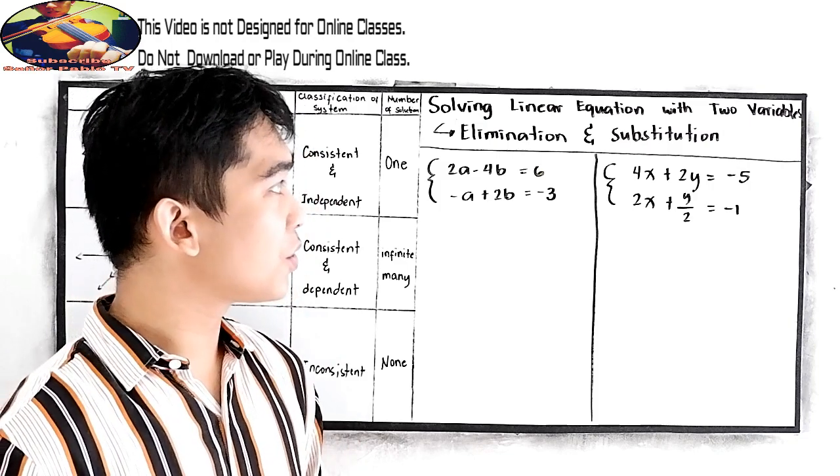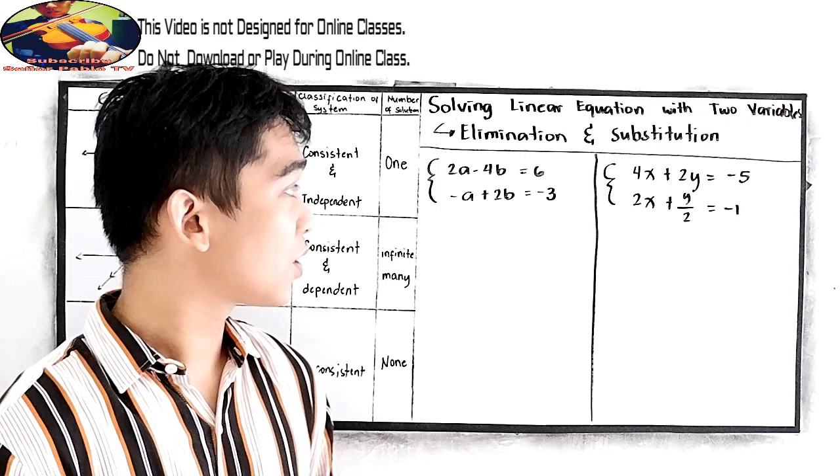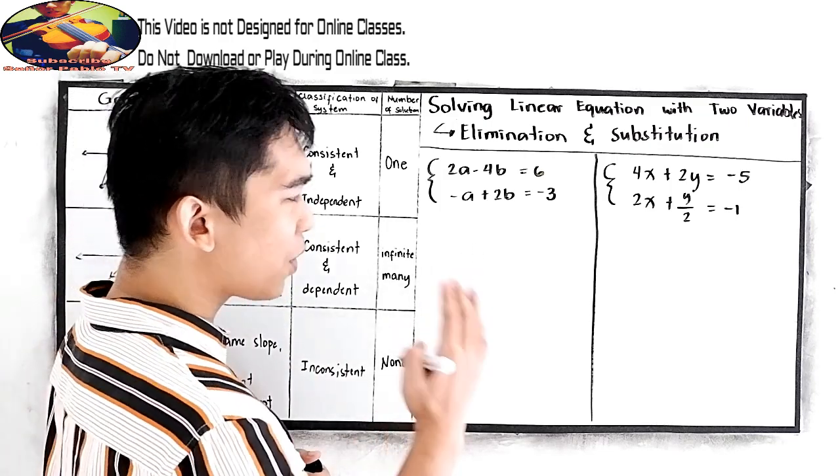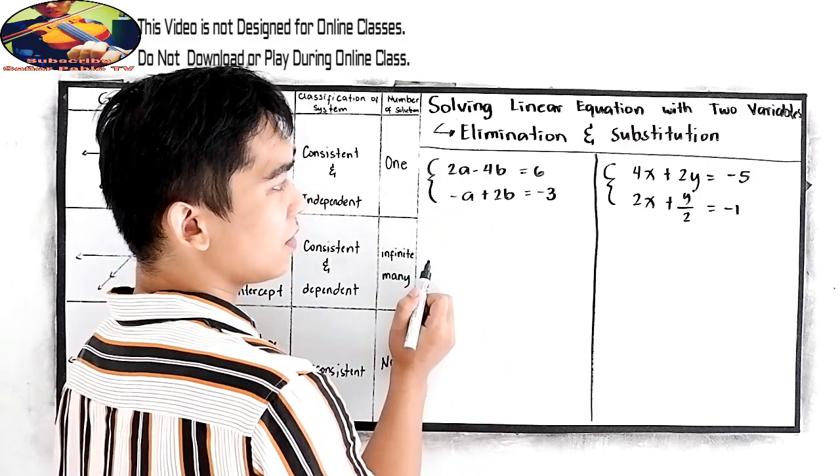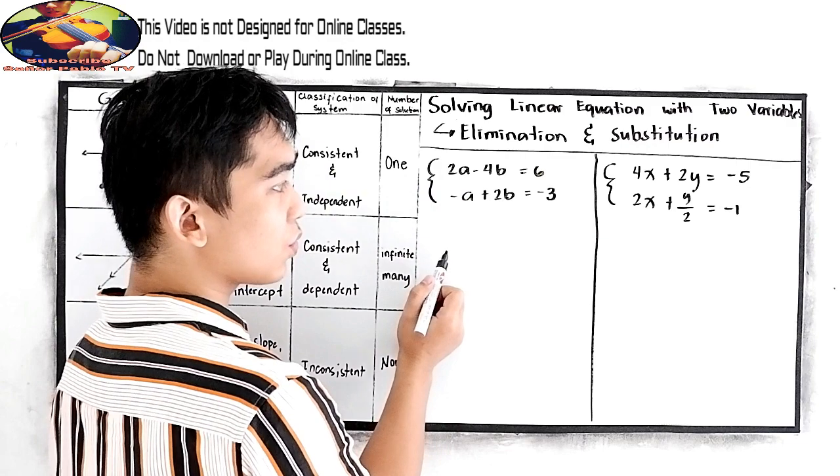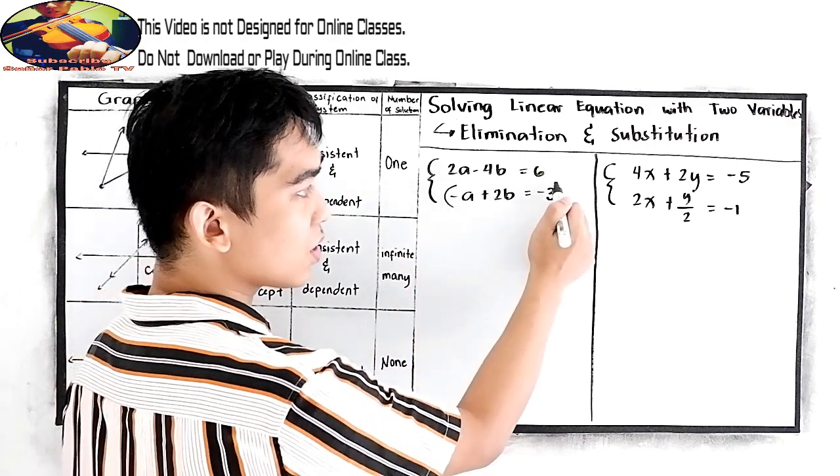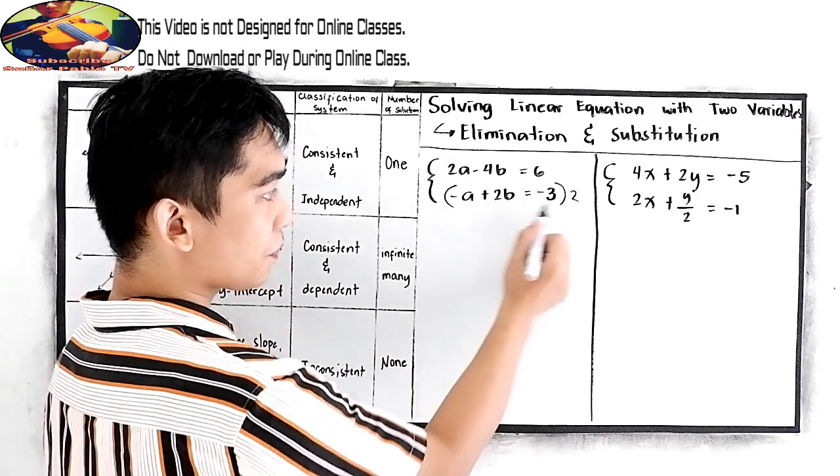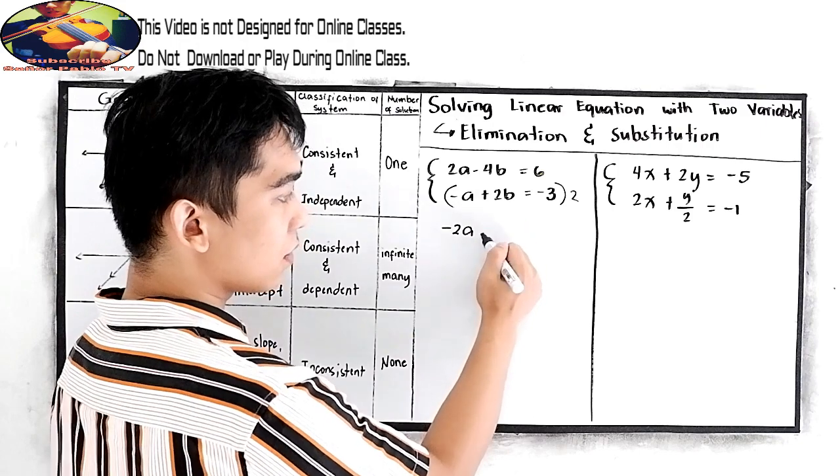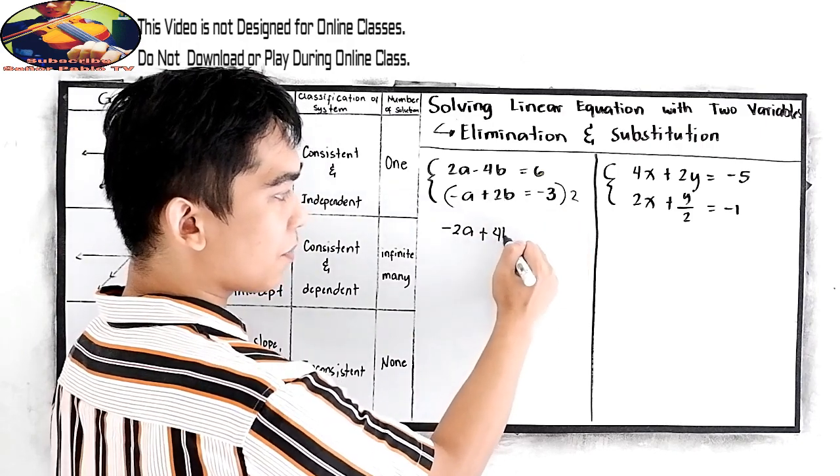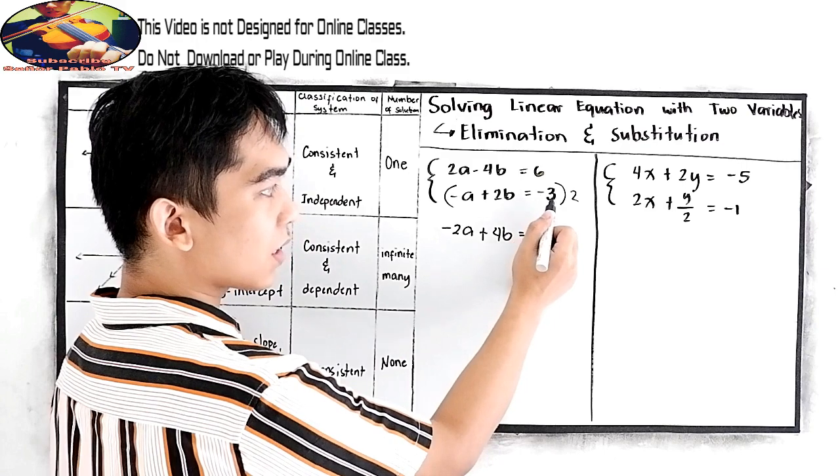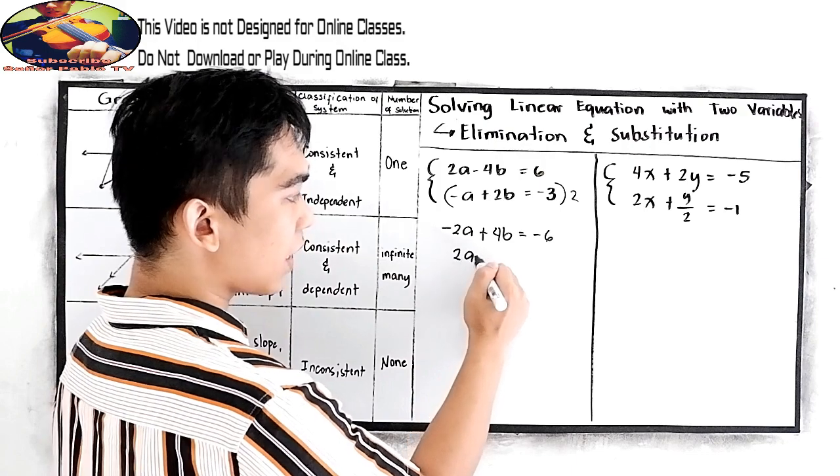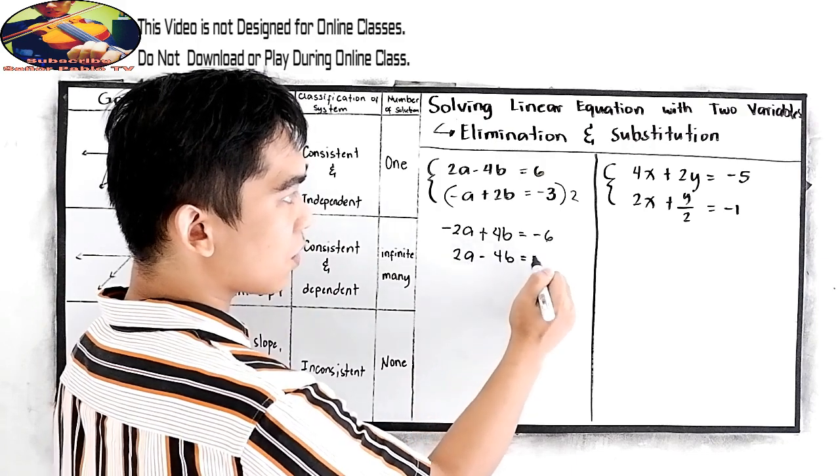So we're going to use the elimination method, the easiest way to solve this. So our goal is the coefficient for a in both equation 1 and equation 2 must be the same. So all I need to do is to multiply 2 in our equation 2. So that will become negative 2a plus 2 times 2b, 4b is equal to negative 3 times 2, negative 6. And just copy the equation 1, 2a minus 4b is equal to 6.